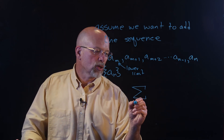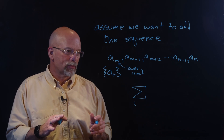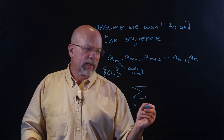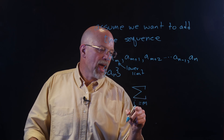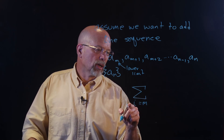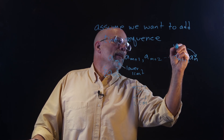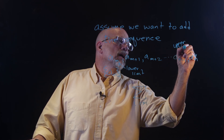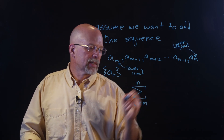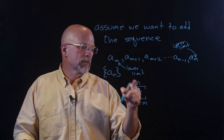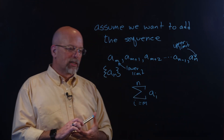We are going to use, for the most part, i a lot — sometimes you may see a j or a k, but I'm going to use an i here. So when i equals m, that's the lower limit. And then we've got n, which represents the upper limit, and that's going to be on the top of the sigma. So we say i equals m to n, and then we're going to sum these a sub i's together.